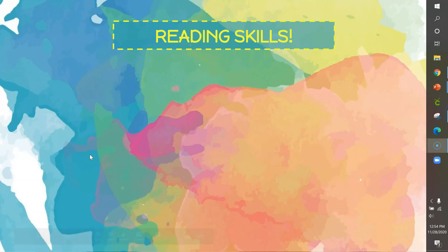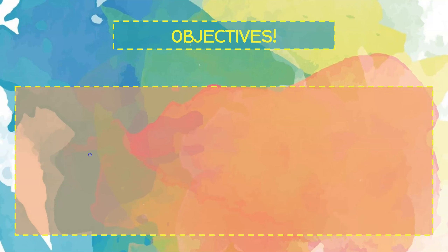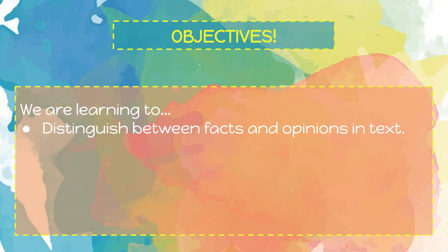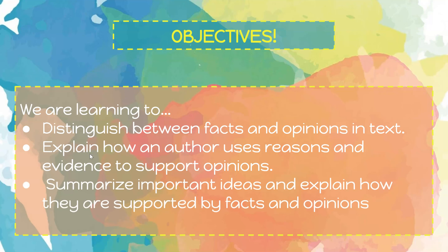Our reading skills for today are fact and opinion and main idea. Let's take a look at our objectives. We are learning to distinguish between facts and opinions in a text, explain how an author uses reasons and evidence to support opinions, and summarize important ideas and explain how they are supported by facts and opinions.